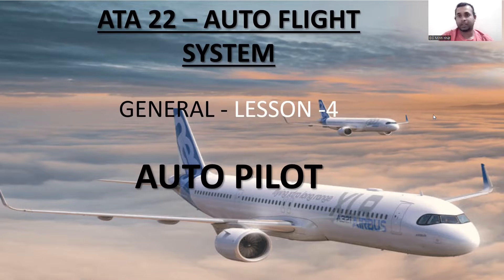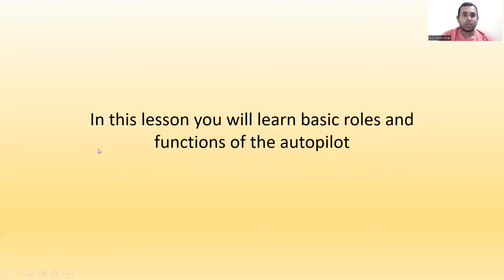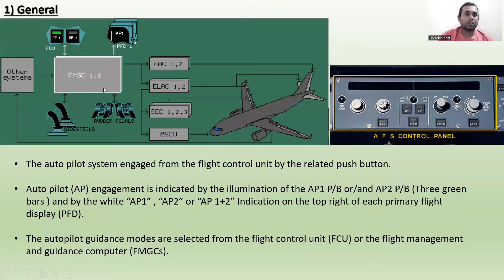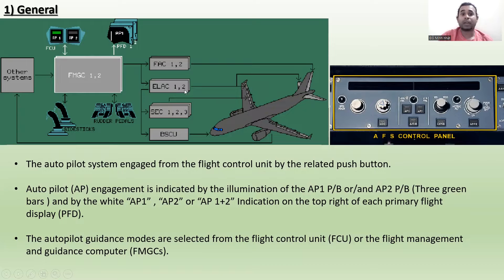Today I'm going to talk about ATA Chapter 22, Auto Flight System — lesson number four: Autopilot. In this lesson you will learn the basic roles and functions of the autopilot. You can see the other systems, the Flight Management Guidance Computers one and two, autopilot system one and two, the PFD, the Flight Augmentation Computer one and two, ELAC one and two, SEC one two three, and the Brake Steering Computer Unit.